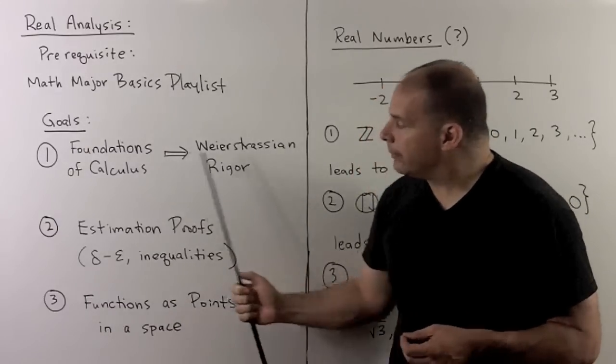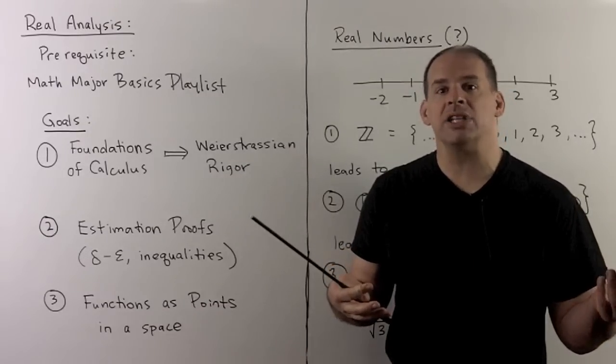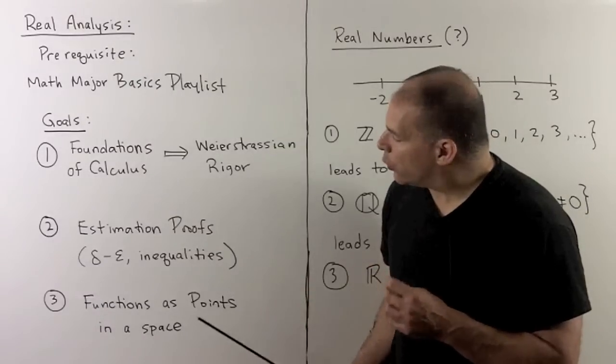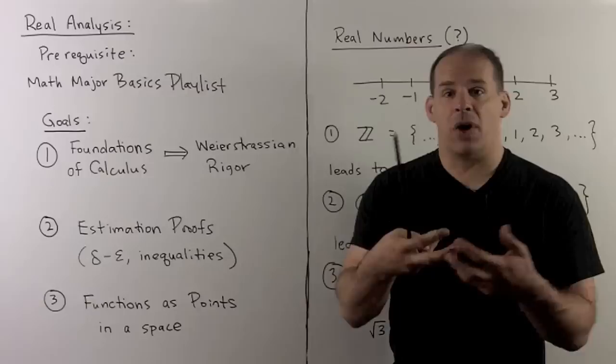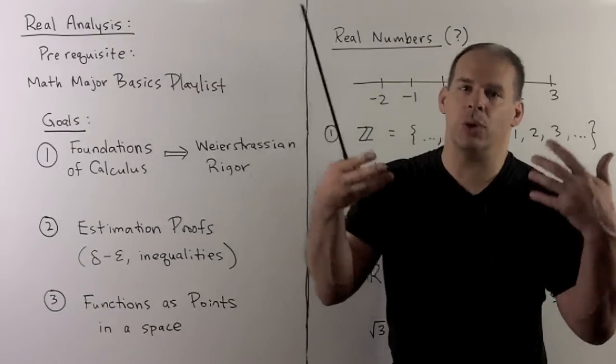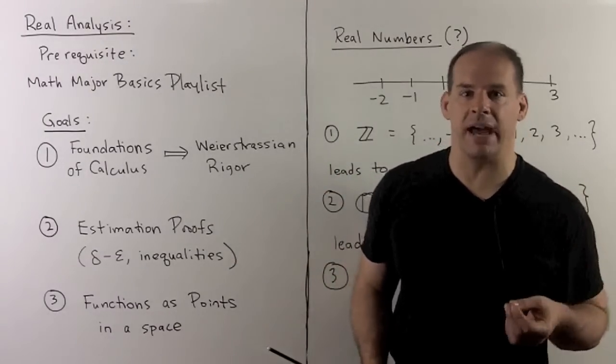Now, from estimation, okay, there's an idea of nearness that comes out of that, which leads to topologies and metric spaces. With that, we can in turn take these functions of interest and treat them as points in a bigger space, and then that leads to an even bigger and more useful theory. Okay, but that's the advanced stuff.